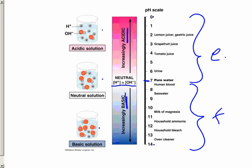Acid alphabetically would come first, so it's 0 to 7. The bases come second alphabetically so they have a second half of the pH scale.